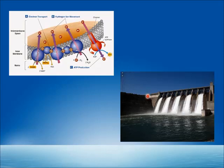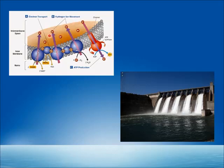This pressure force is harnessed by ATP synthase to produce ATP, which is the energy currency of our cells. It's much akin to a dam where water is built up and the flow of water is used to generate electricity — similarly, this flow of hydrogen is harnessed by ATP synthase to produce ATP.